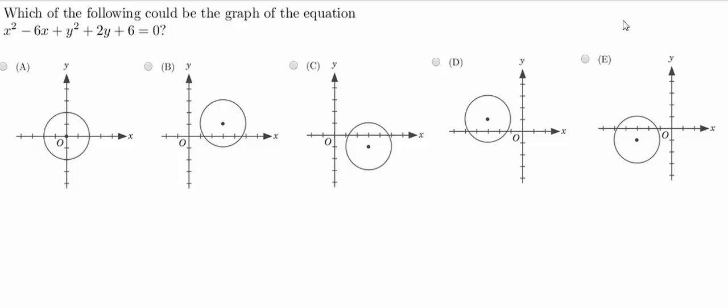So the question says, which of the following could be the graph of the equation x squared minus 6x plus y squared plus 2y plus 6 equals 0?